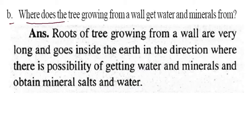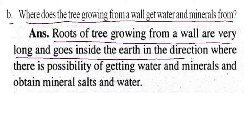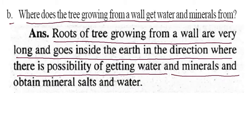Where does a tree growing from a wall get water and minerals? The roots of a tree growing in a wall are very long and go inside the earth in the direction where there is a possibility of getting water and minerals, and thus obtain mineral salts and water.